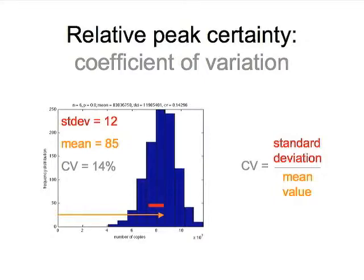One way of understanding the extent of our certainty is in a single number — the coefficient of variation, which divides the standard deviation by the mean value. The long bar in green is the extent of the average peak height. One standard deviation is shown in red. Taking the ratio — 12 over 85 — gives a coefficient of variation of 14%. This bell curve of peak distributions is taking up about half of the distance from baseline up to the maximal peak.